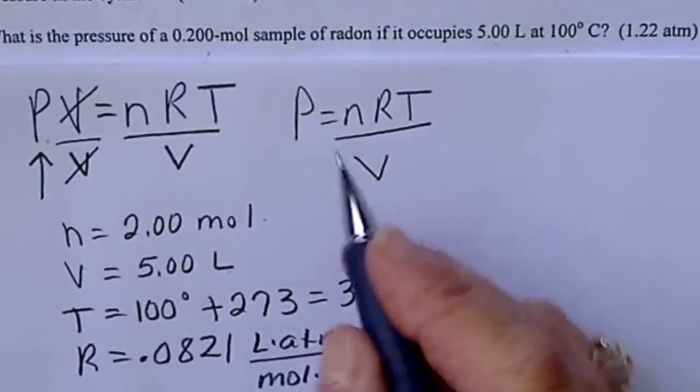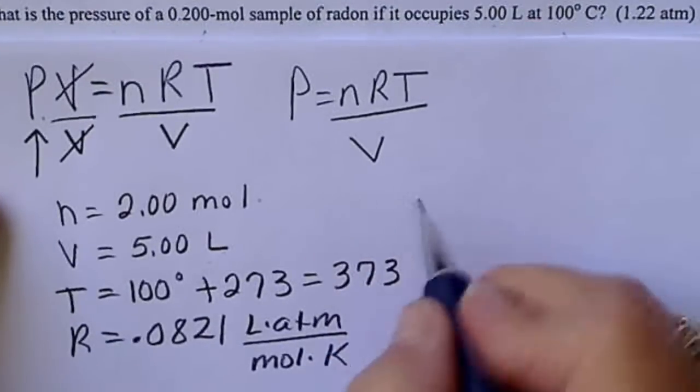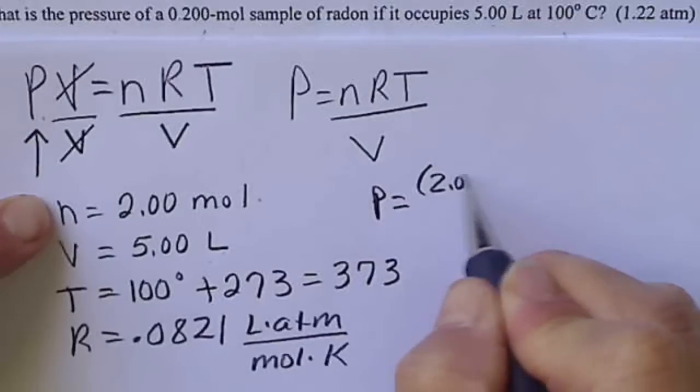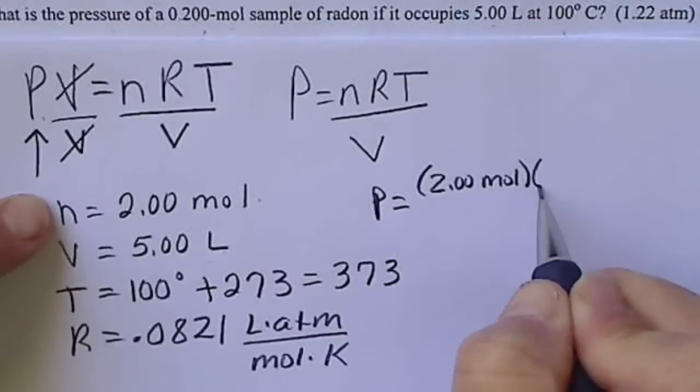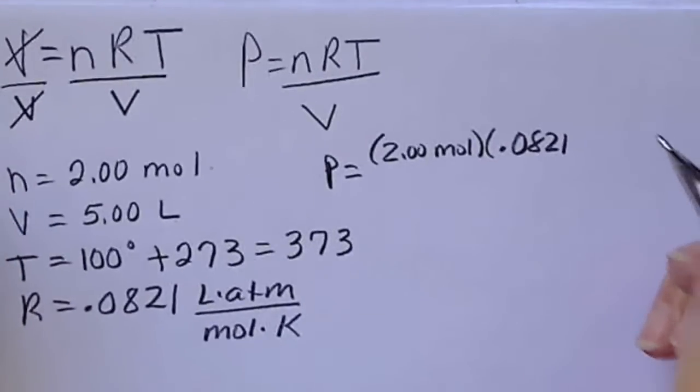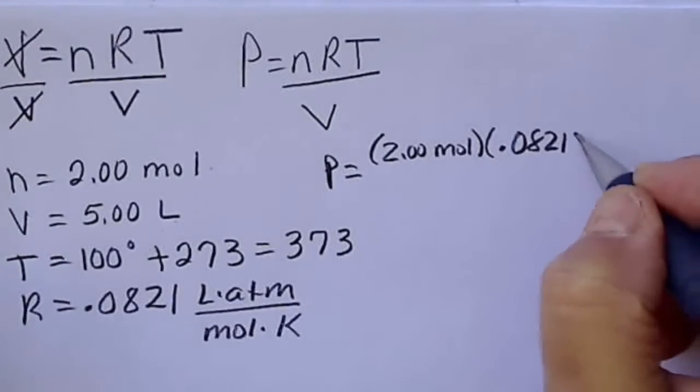So if I go up to this formula and plug these values in, P equals my n is 2 moles, R is 0.0821. And I'm not going to write all those units down for R. Well, I guess I will.